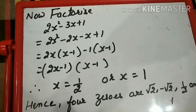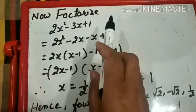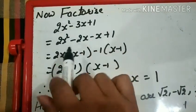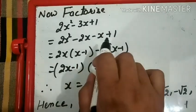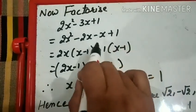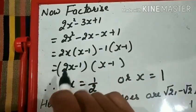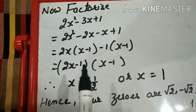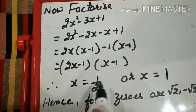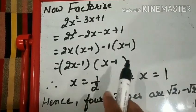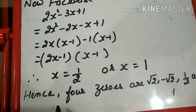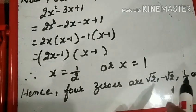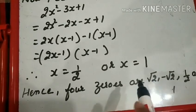We multiply x² by 1 to get x², and 1 × (-2) = -2. Sign change, and both terms cancel. Remainder is 0. Our quotient is 2x² - 3x + 1. We factorize using middle term splitting: 2x² - 2x - x + 1. Taking 2x common: 2x(x - 1), and -1 common: -1(x - 1). So factors are (2x - 1)(x - 1). Setting 2x - 1 = 0 gives x = 1/2; setting x - 1 = 0 gives x = 1.